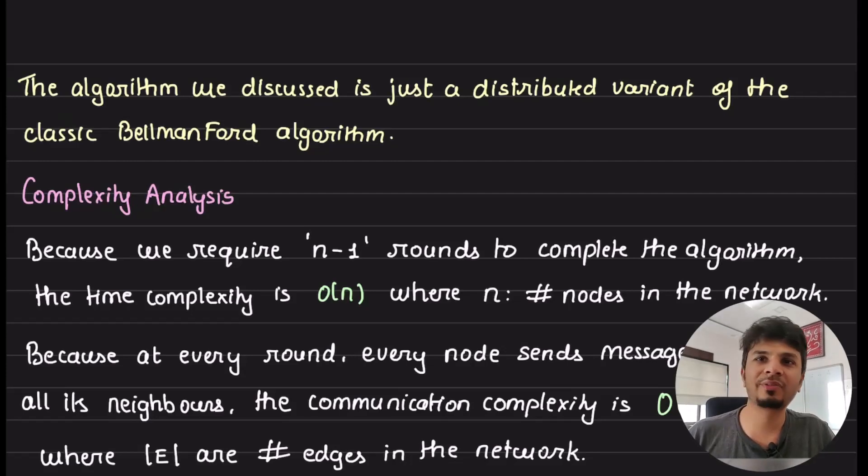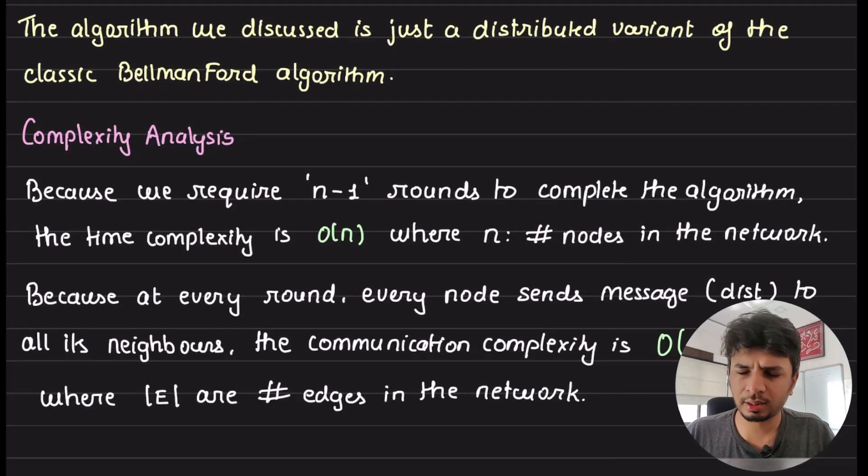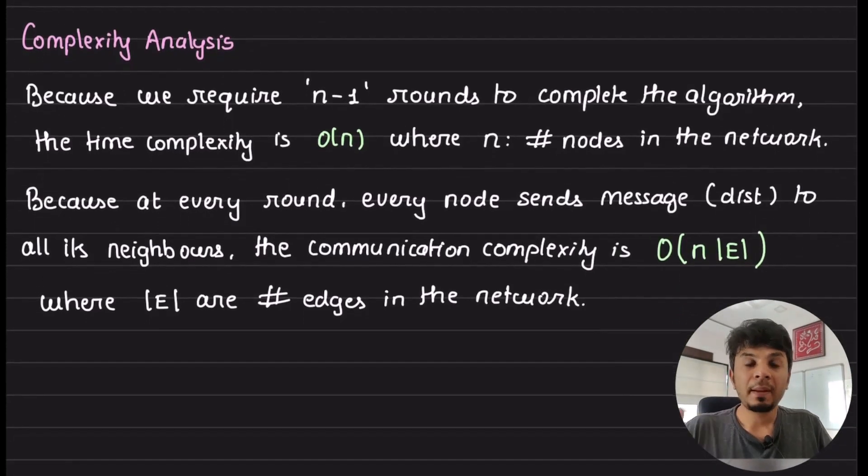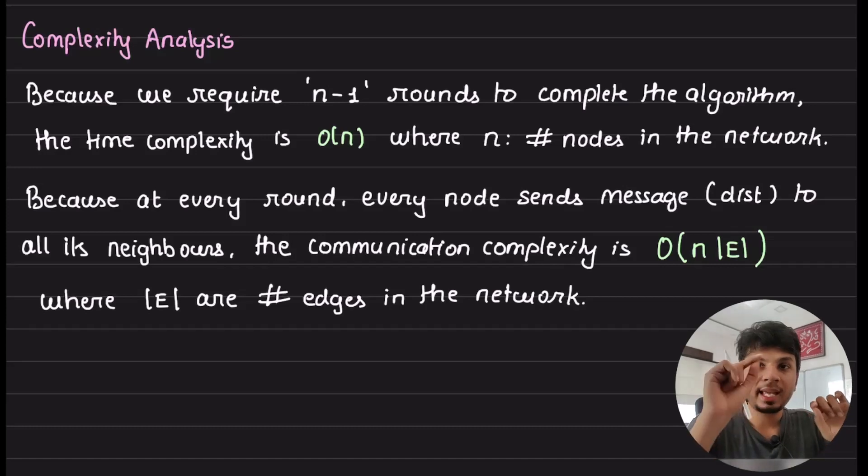Now quickly concluding this video on the complexity analysis of this approach. Because we saw that it would take n-1 rounds to complete the algorithm, and every node would know what n is. Every node would know that round one is done, round two is done, round three is done - that's how your algorithm would stop. That's why it's important for all the nodes to know n, the total number of nodes in the system. So the time complexity of the system is order n, where n is the number of nodes in the network. You take n-1 rounds, so order n is the time complexity of it.